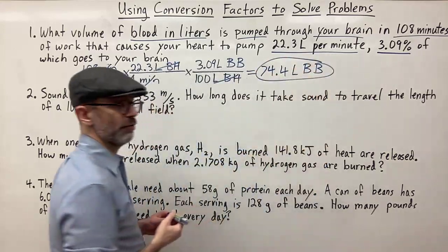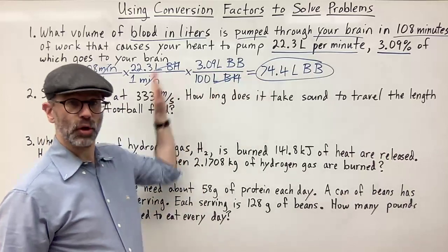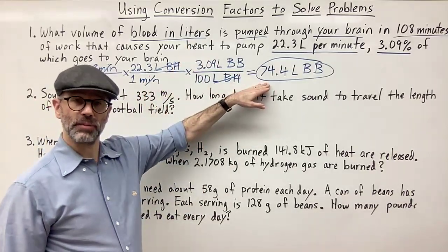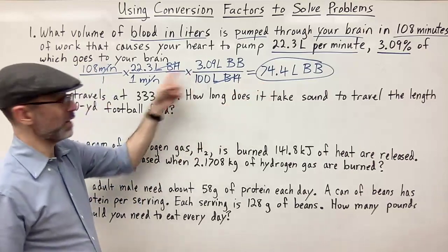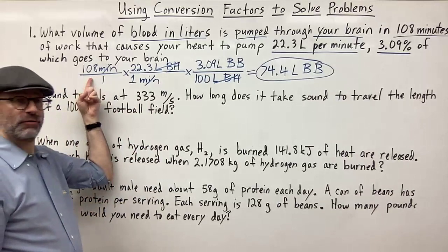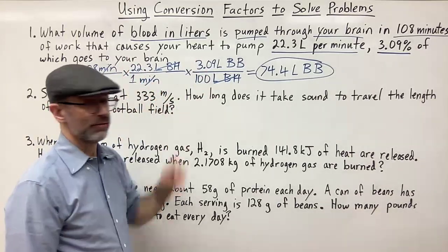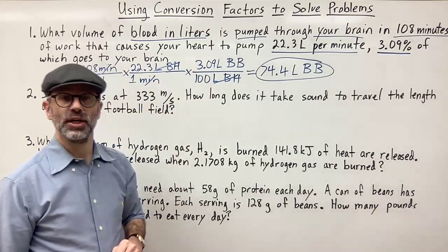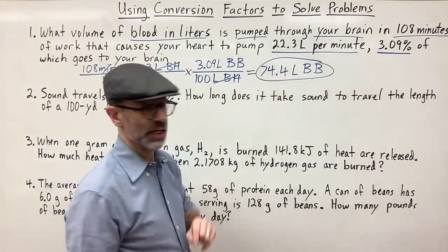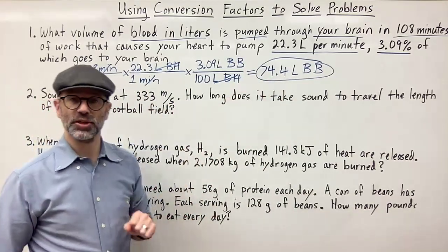When figuring out significant figures for multiplication and division, the rule is that your answer should have the same number of sig figs as the measurement with the least number of sig figs. Here we have three sig figs, here three sig figs, and here three sig figs. So three is the answer — we have three sig figs. That's the answer for this problem.